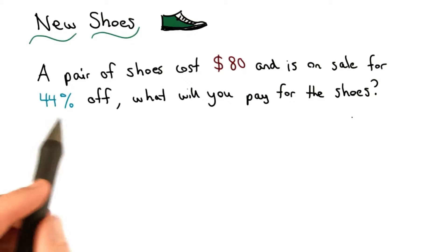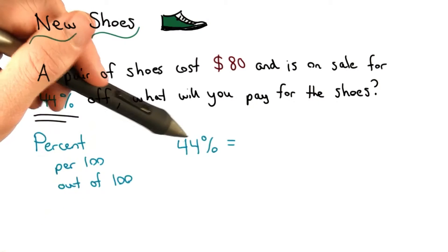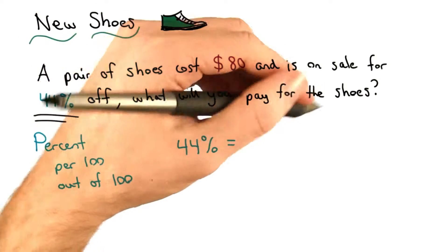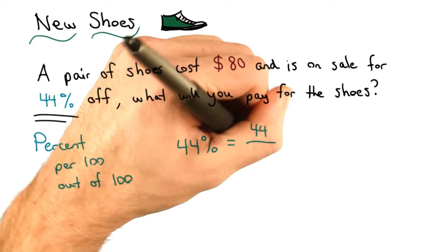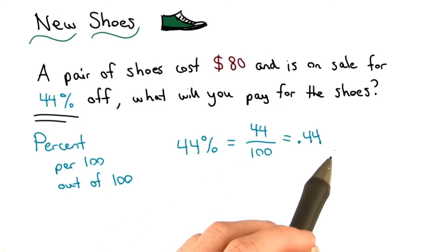The first thing we need to recognize is this problem has a percent in it. Percent literally means per hundred, or out of a hundred. I can write 44% another way. I know it's 44 out of a hundred, or 44 divided by a hundred. 44 divided by a hundred is the same thing as 44 hundredths.